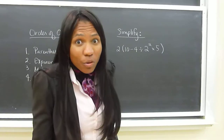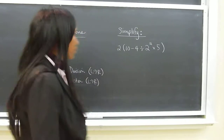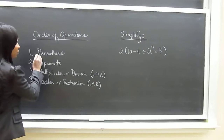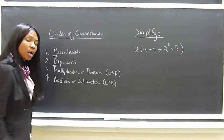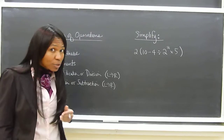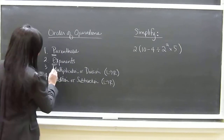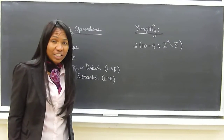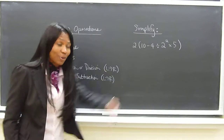You may ask, what are the order of operations? I'll tell you. The order of operations are: first, parentheses; exponents; multiplication or division, whichever one you see going left to right first; or addition or subtraction, whichever one you see left to right first.